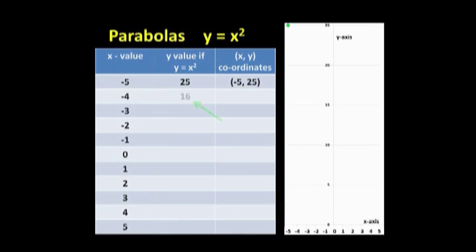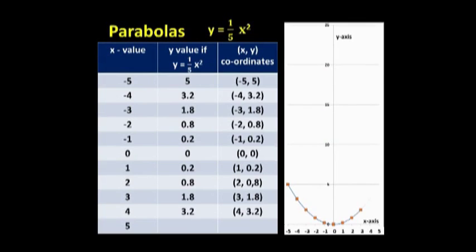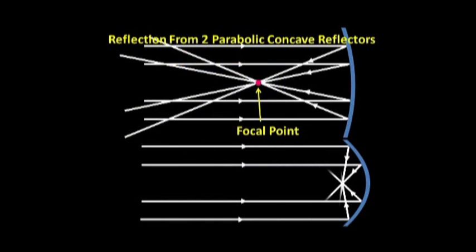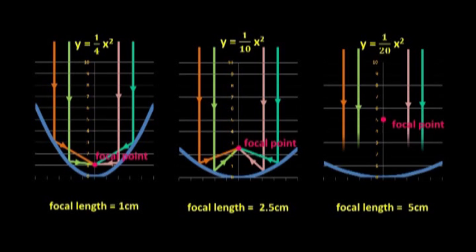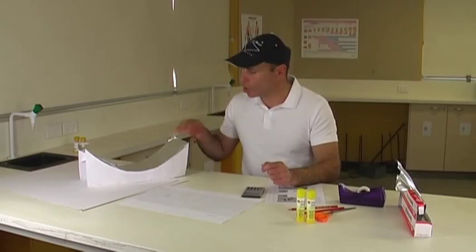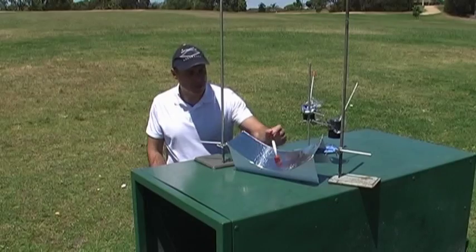The first bonus feature introduces students to the mathematics of parabolas, explaining that every parabolic reflector has a focal length which you can determine mathematically. Students are then shown how to make their own parabolic reflector that they can use to heat up water.